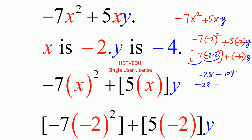Now we substitute for y. In the space occupied by y, we substitute y equals negative 4. So we have negative 28, and then negative 10 times negative 4 is positive 40. And what is positive 40 minus 28? It is positive 12. So our answer is positive 12.